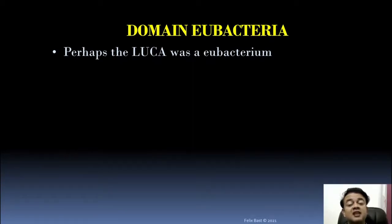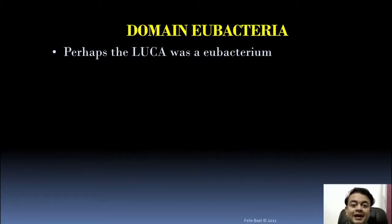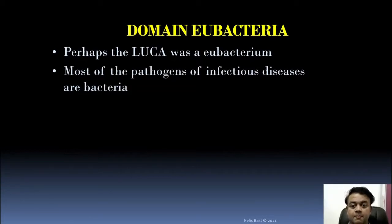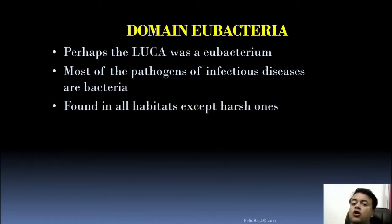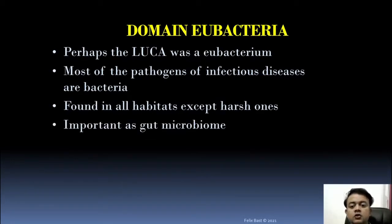Coming to domain Eubacteria: the last universal common ancestor (LUCA) — the first life on Earth — was more like a bacterium rather than an archaebacterium. Though the name Archaebacteria might suggest it is the oldest, Eubacteria is older than Archaebacteria in many respects. Most pathogens of infectious diseases are bacteria — COVID-19 is viral, but most infectious diseases are bacterial.